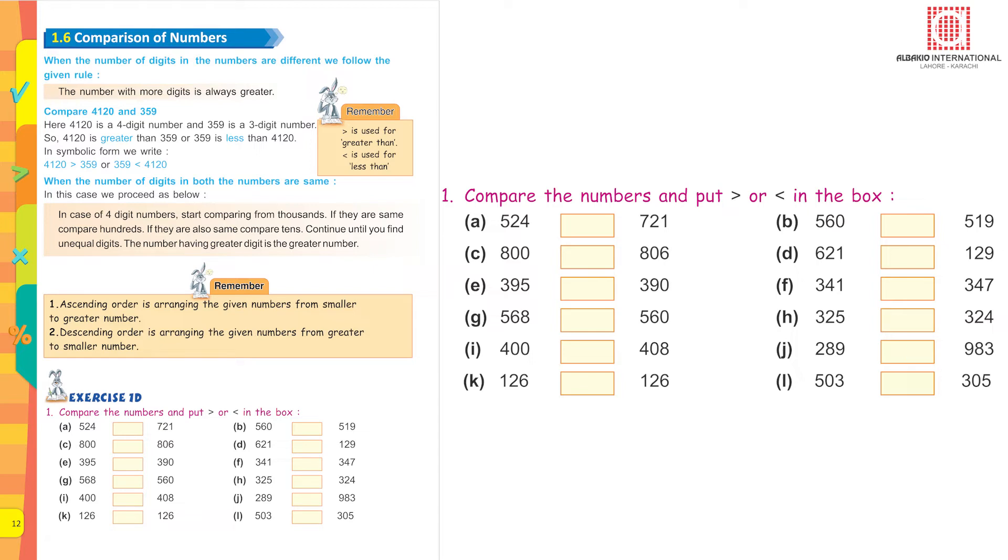524 is greater or lesser than 721? Look at hundreds: 500 here, it is 700. That means 5 is smaller than 7, so 524 is lesser than 721.